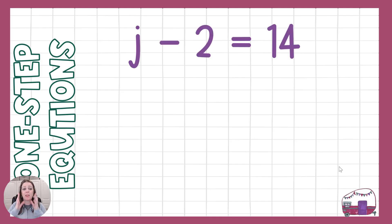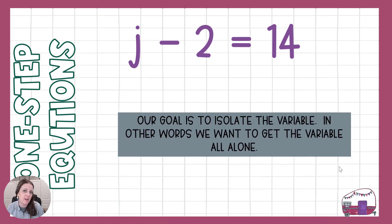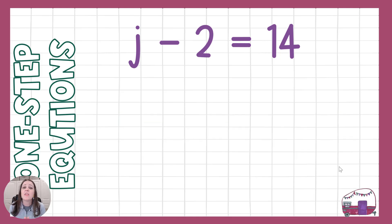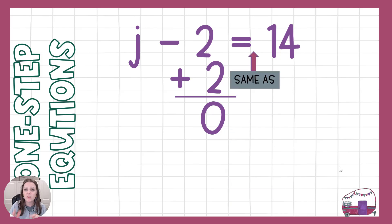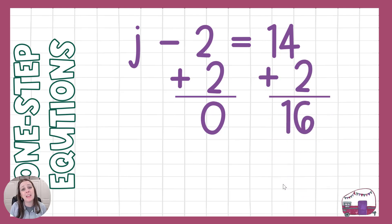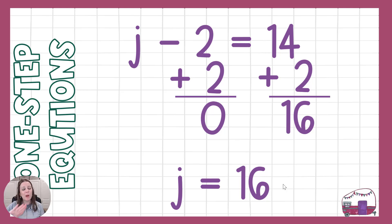How do you think we're going to solve subtraction equations? You got it — we're going to do the opposite and add this time. Same goal: isolate the variable, get it all by itself. This time our variable is j, and it has a minus 2. The inverse — the opposite of minus 2 — is a positive 2. Those opposite pairs make 0, so it's gone. Things aren't the same anymore, so we go to the other side and do the exact same thing. 14 plus 2 is 16, so j equals 16. Plug it back in: 16 minus 2 is in fact 14.